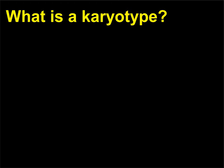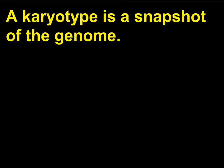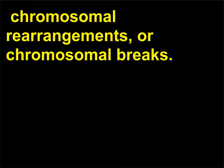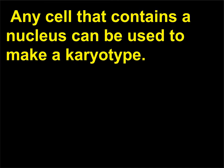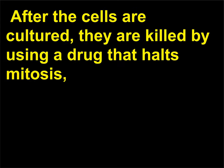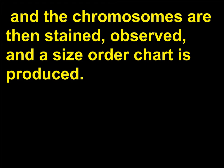What is a karyotype? A karyotype is a snapshot of the genome. A karyotype can be used to detect extra or missing chromosomes, chromosomal rearrangements, or chromosomal breaks. Any cell that contains a nucleus can be used to make a karyotype. However, white blood cells seem to work best for human karyotypes. After the cells are cultured, they are killed by using a drug that halts mitosis, and the chromosomes are then stained, observed, and a size-order chart is produced.